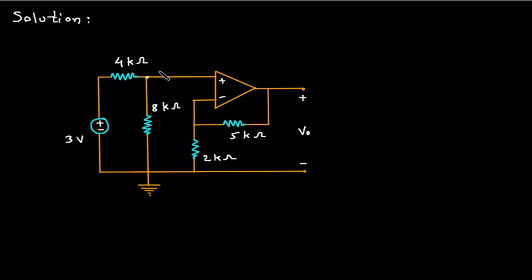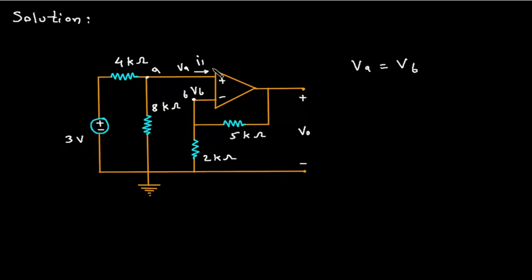Let's say this is node A and this is node B. The voltage at node A will be VA and the voltage at node B will be VB. In the case of an ideal op-amp, VA is equal to VB. Also, let's say this is current I1 and this is current I2. For an ideal op-amp, I1 is equal to 0 and I2 is equal to 0.